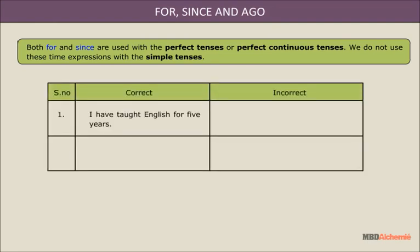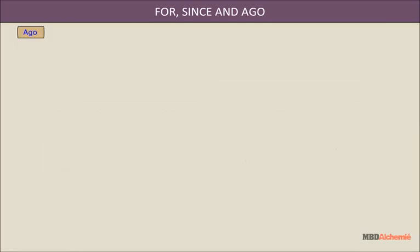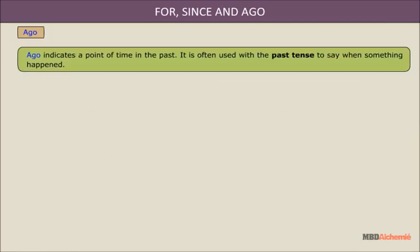I have taught English for five years — correct. I teach English for three years — incorrect. I have known your parents since two thousand — correct. I know your parents since two thousand — incorrect.